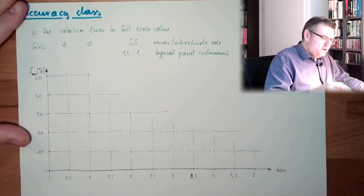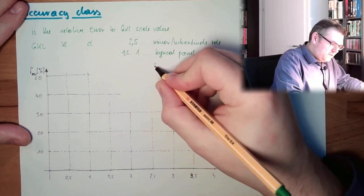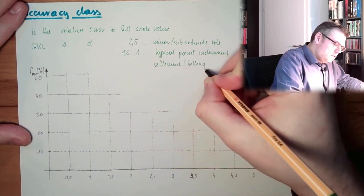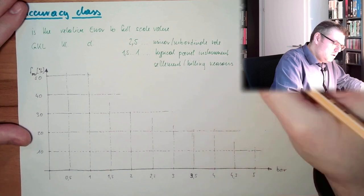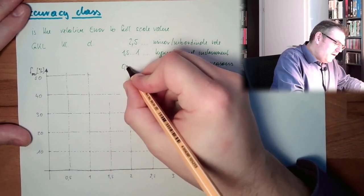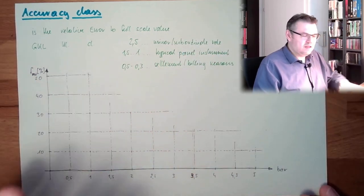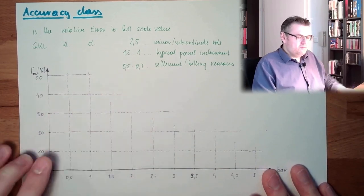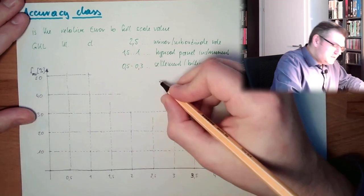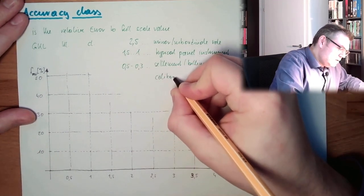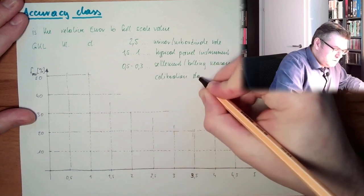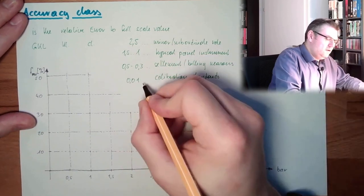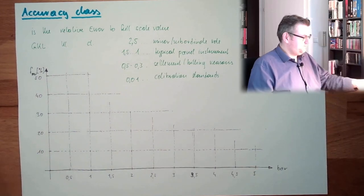If you have at home, there is some settlement reasons, billing. There, in a way, 0.5 to 0.3. This is the typical class of these. So 0.5% error, maximum. This is for settlement reasons. And calibration standards? They are at 0.01. These are typical class values.